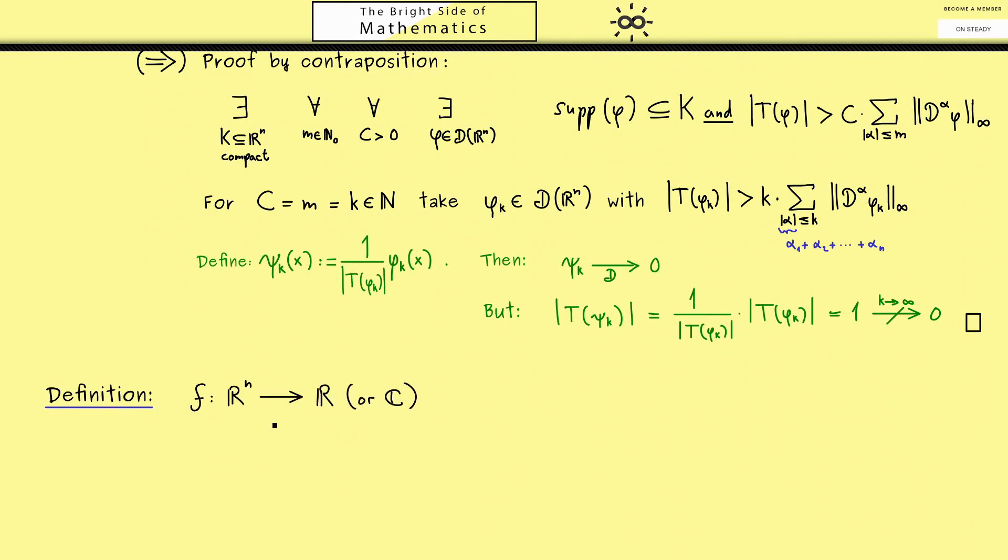Let's call the function f, and it can have values in R or in C. And we call it locally integrable if the function is integrable when we restrict it to any compact set. So you can put it in the way that the integral over a compact set k of the function f with the absolute value makes sense and is finite.